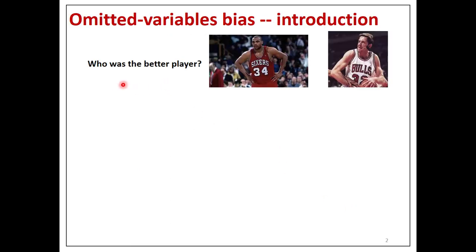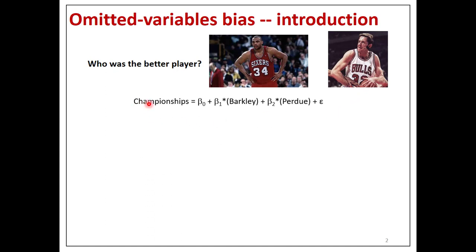Let's start off and ask: who among these two was the better player? Many of you might recognize Charles Barkley — some consider him one of the 25 best players ever. The other player, if you're one of my students and can recognize who this is, I'll give you 4.9 imaginary bonus points — because I believe that was his career scoring average. That's Will Purdue.